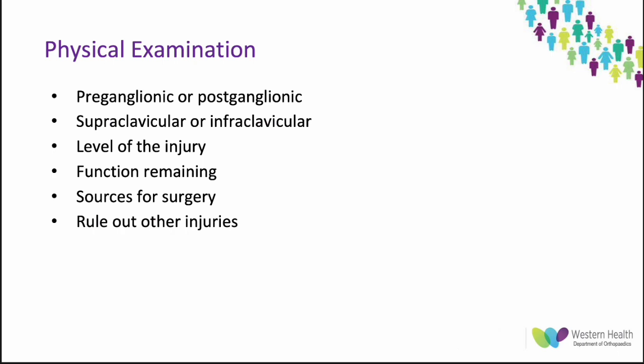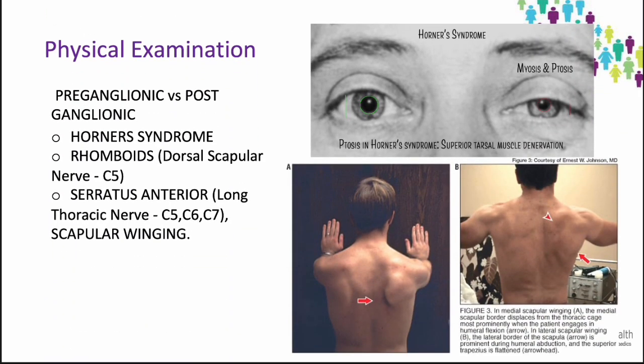The goals of a good physical examination are to determine the level of the injury — whether it is preganglionic or postganglionic, supraclavicular or infraclavicular — to assess the remaining function of the patient, to assess for sources for surgery, and to rule out other injuries. You can start the physical examination by checking for Horner's syndrome and winging of the scapula to determine preganglionic versus postganglionic. Overall, the plexus examination proceeds from proximal to distal, and the order is checking motor, then sensory, then reflexes.